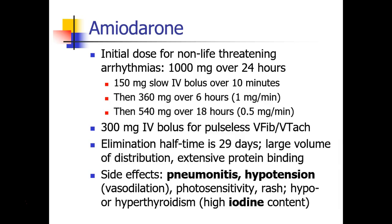In patients who are in cardiac arrest, such as pulseless V-tach or V-fib, we give 300 milligrams as an IV push. Amiodarone has a very long elimination half-life of 29 days and a large volume of distribution with extensive protein binding, so the drug hangs around for a long time. Side effects include lung injury in the form of pneumonitis, hypotension due to vasodilation, photosensitivity, skin rash, and it can cause hypo- or hyperthyroidism.